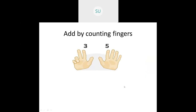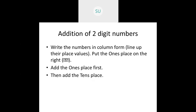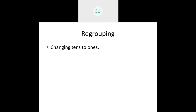We saw different examples also. Then we saw adding by counting fingers — you use your fingers to count numbers. Then we started with addition of two-digit numbers. You write the numbers in column form, put the ones place on the right, add the ones place first, and then add the tens place. This is the example we saw for adding two-digit numbers.